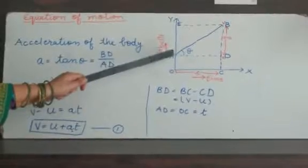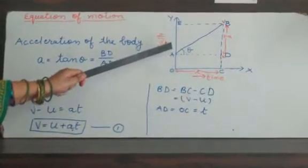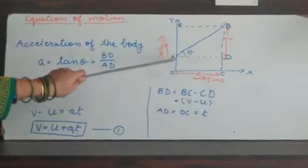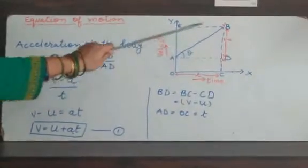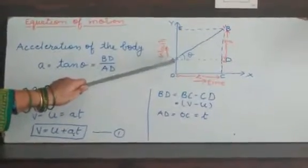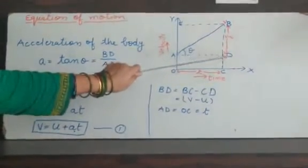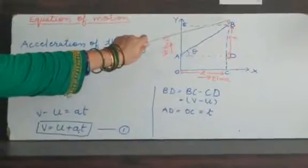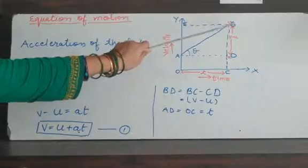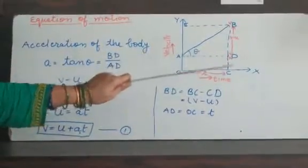Suppose our body is moving along a straight line with uniform acceleration. Now, suppose the body started from point A and ends at point B. At that moment, we can say initial velocity at point A was U and final velocity at point B was V. Time at A was 0 and when the body reached at point B, the time period was T.